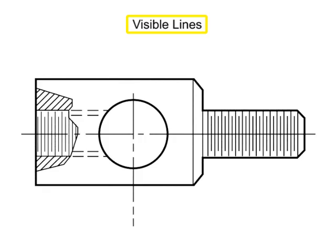Visible lines, sometimes called object lines, represent the edges or lines on an object. They are solid lines with a thick weight.